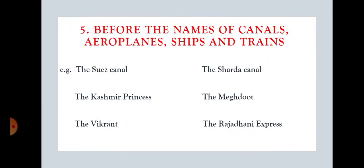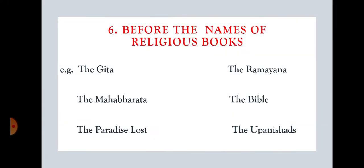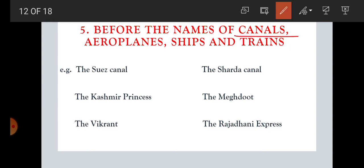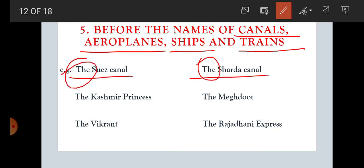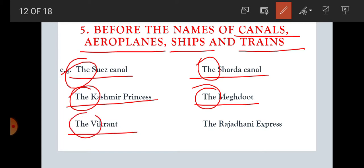Rule number five: before the names of canals, aeroplanes, ships and trains, we use 'the.' For example: the Suez Canal — 'the' is used. The Shahada Canal — 'the' is used. The Kashmir Princess — it is an aeroplane name, so 'the' is used. The Meghdoot — again an aeroplane name. The Vikrant — it is a ship name, so 'the' is used. The Rajdhani Express — it is a train name, so 'the' is used.